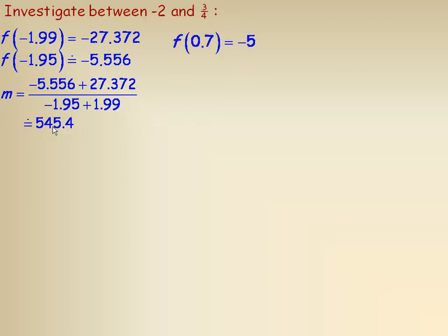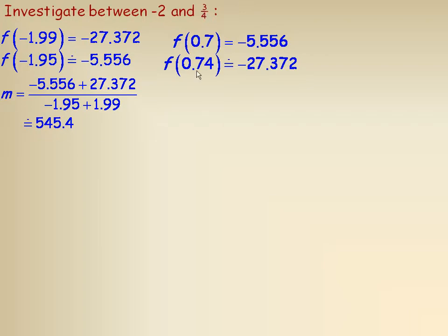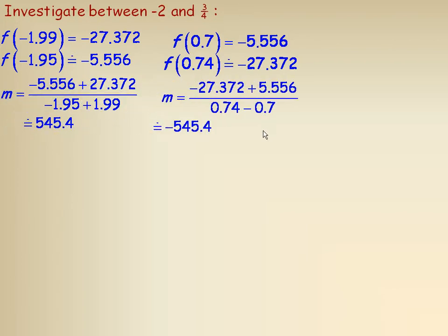Now taking a number just below 3/4 — x = 0.7 — and then x = 0.74 (still below 3/4 but very close to it), I find the slope between those two points. The slope turns out to be a very large negative value — a very steeply negatively sloped line near 3/4.